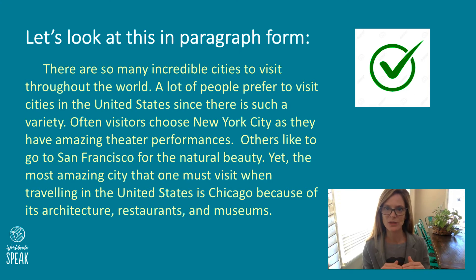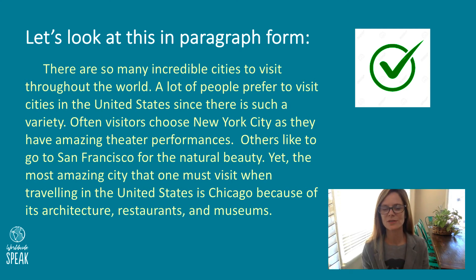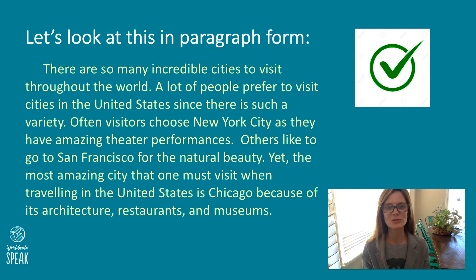So you have the image of the upside-down triangle for the introduction paragraph. Let's now move to what it looks like in real life. Here is the same example in paragraph form like you would write it for school. Let's read it together: 'There are so many incredible cities to visit throughout the world. A lot of people prefer to visit cities in the United States since there's such a variety. Often visitors choose New York City as they have amazing theater performances. Others like to go to San Francisco for the natural beauty. Yet the most amazing city that one must visit when traveling in the United States is Chicago because of its architecture, restaurants, and museums.' This is an example of a clear and effective introduction paragraph — a very basic introduction which is a perfect way for the English language learner to start.